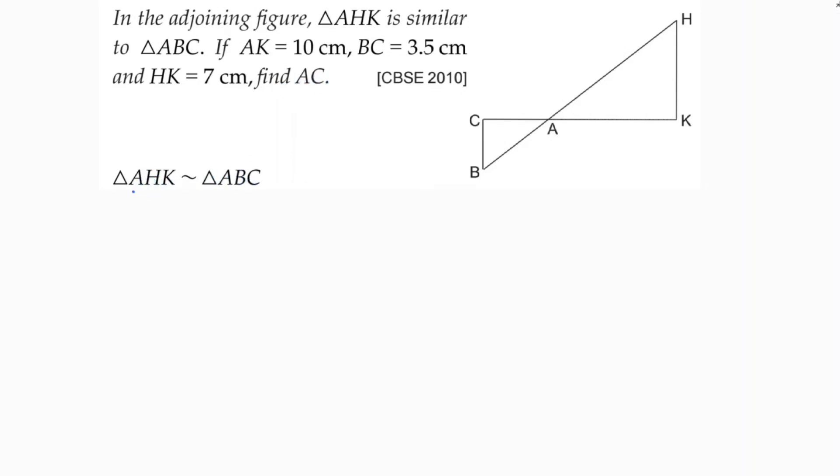So corresponding sides are proportional. Here AH by AB, next if we take HK by BC, and AK by AC.